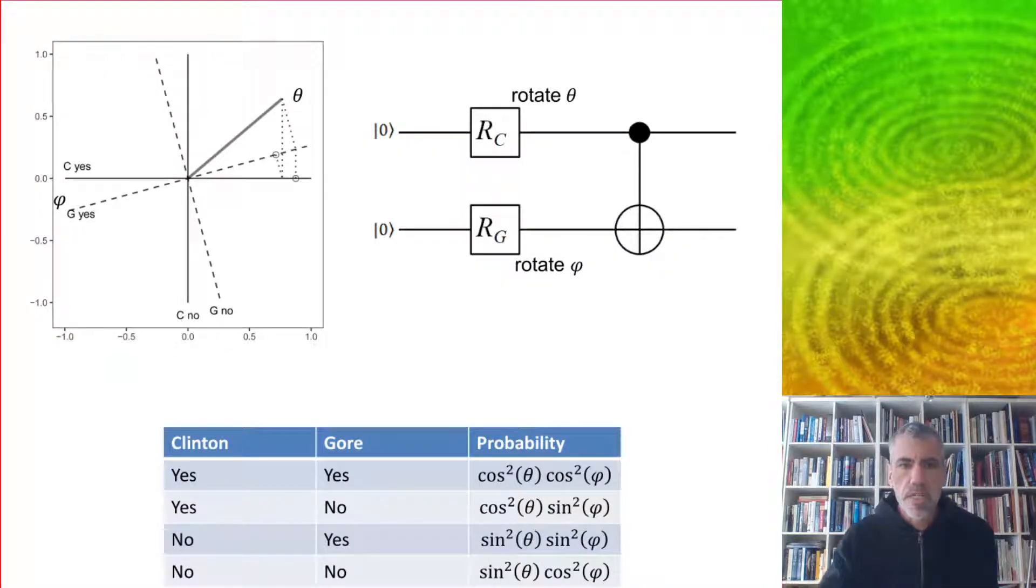If we go through the exercise of calculating all the different probabilities for the case where it's Clinton and then Gore, we find the table of probabilities looks like this.